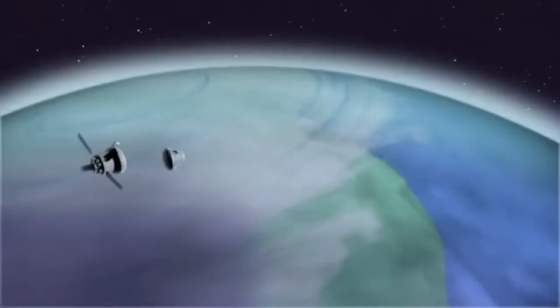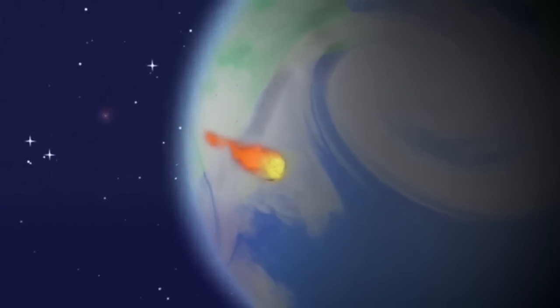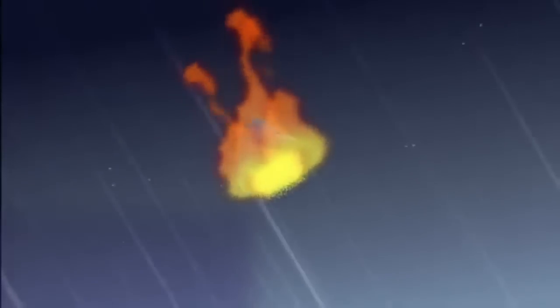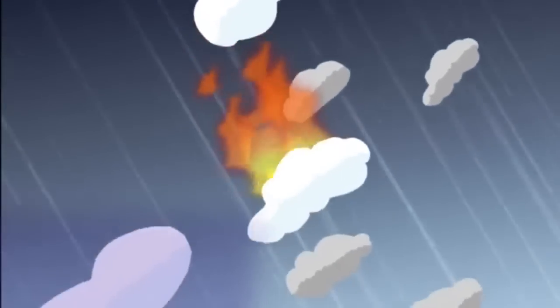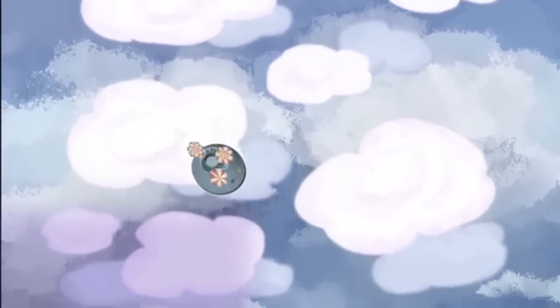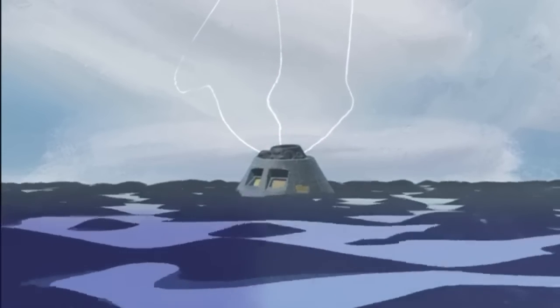Before entering Earth's atmosphere, Orion's Service Module will separate from the Crew Module. The Crew Module will be traveling at a speed of about 25,000 miles per hour when it hits the atmosphere. Orion will reach temperatures of nearly 5,000 degrees Fahrenheit as it slows down due to air friction. That's almost half as hot as the Sun! But don't worry, Orion has a heat shield to protect it, and parachutes will make sure it lands safely in the Pacific Ocean at the end of the mission.